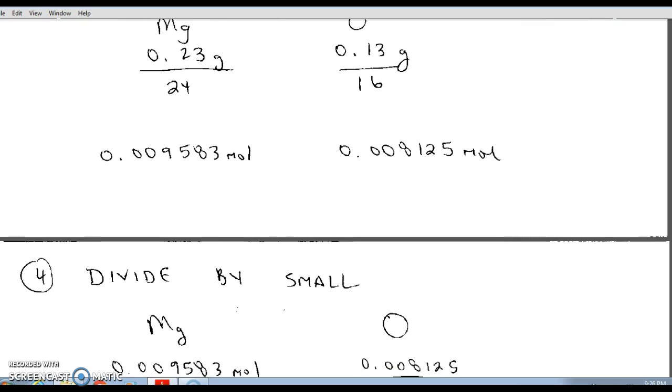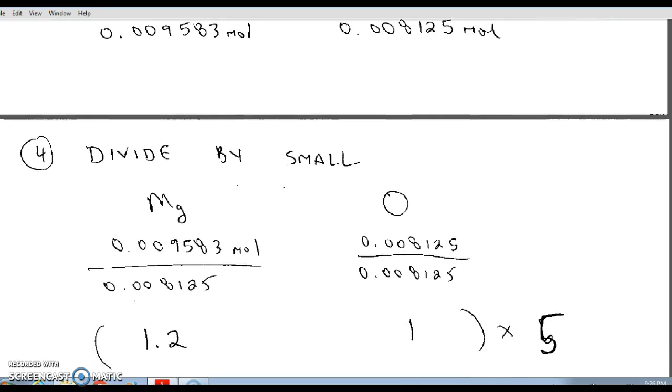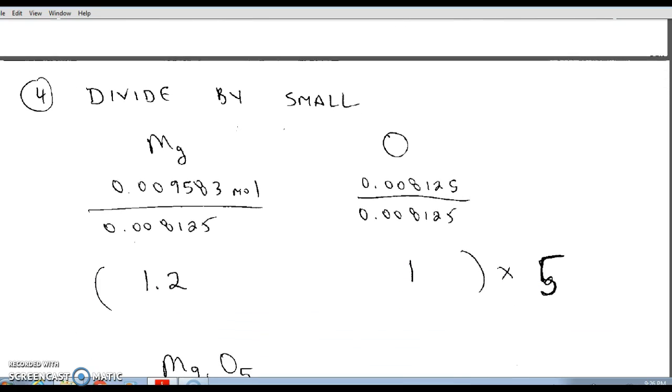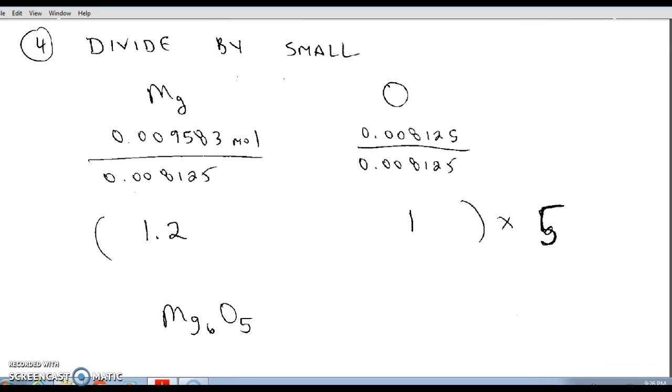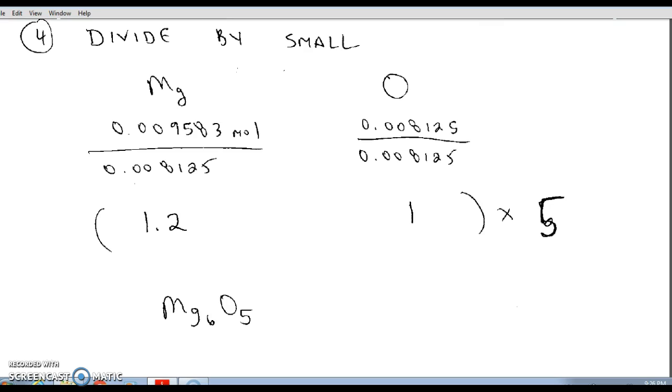Step number four asks you to find the mole ratio and therefore the empirical formula, and that would be the divide by small step of the empirical formula calculation. I take my two answers to number three, I choose the smaller of the two answers and I divide through by that number into both of the other numbers. So 0.008125 divided by itself is just one, and 0.009583 divided by 0.008125 is 1.2.